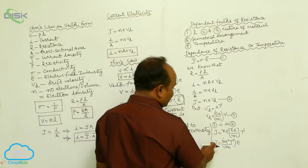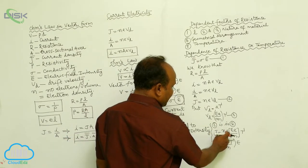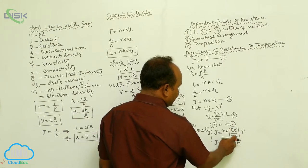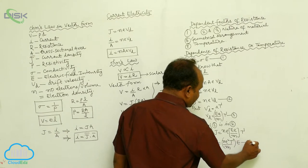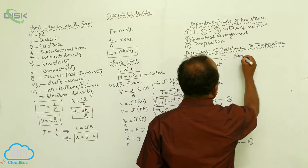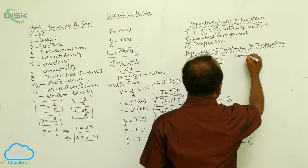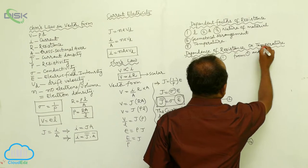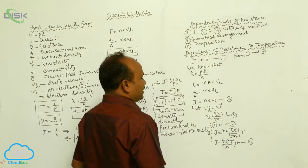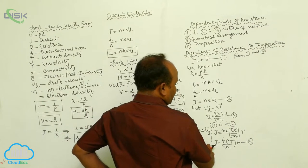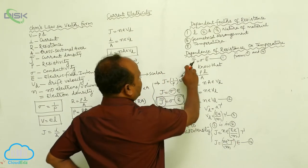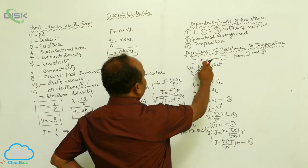On rearranging, J is equals to N E square tau by M into electric field intensity. This is called the fourth equation. From equations 1 and 4, J is equals to N E square tau by M into E. Therefore, J is equals to sigma into E.